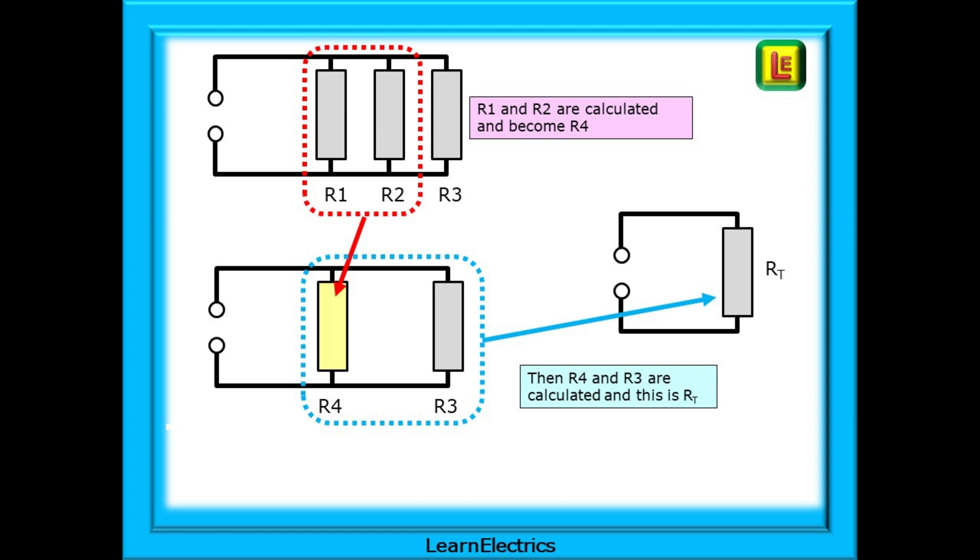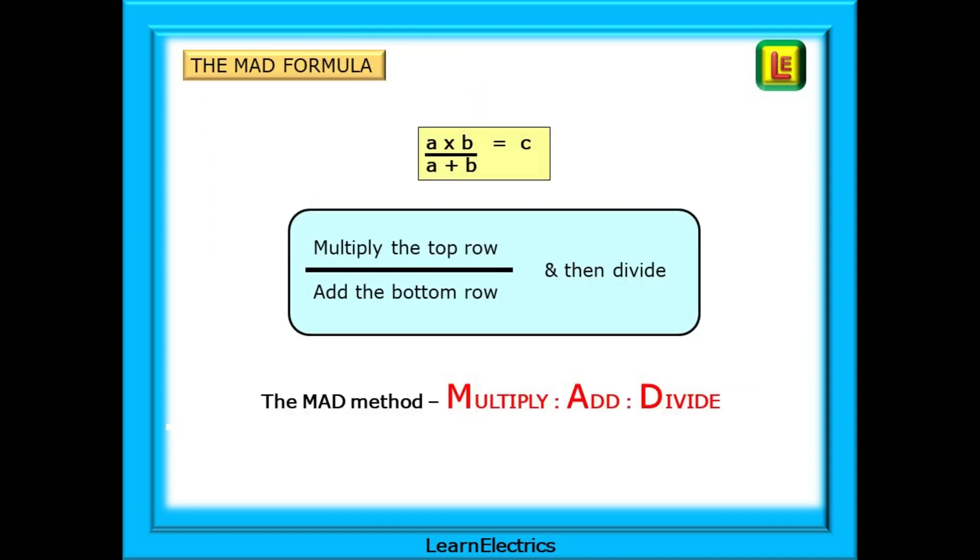First, we calculate R1 and R2 to find what single value can replace these two. We will call our answer R4. Then we calculate R4 and R3 as two resistors to give us the total resistance. We made R1 and R2 become R4, and then R4 and R3 become RT. The algebraic explanation for this is as shown here. A times B over A plus B is C. We multiply the top row, add the bottom row, and then divide the two answers. Top over bottom, MAD, M-A-D, stands for multiply, add, divide.